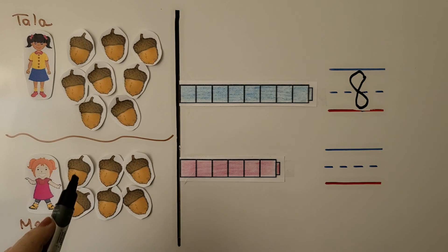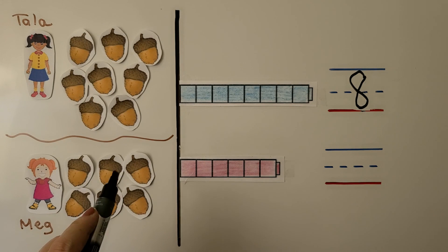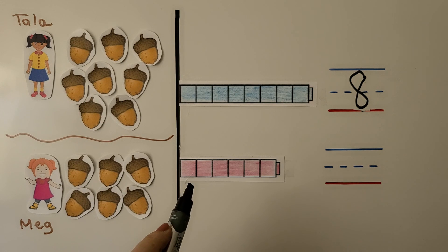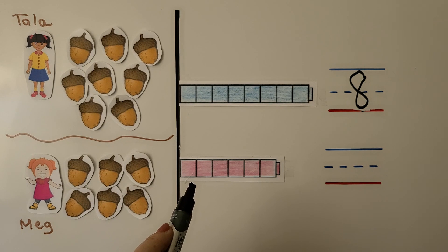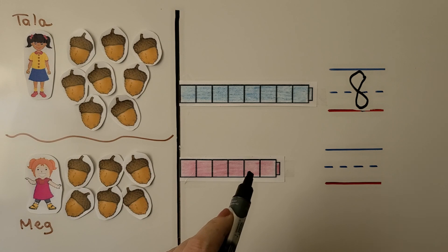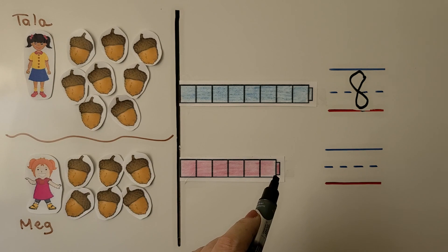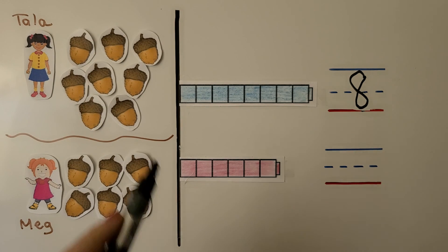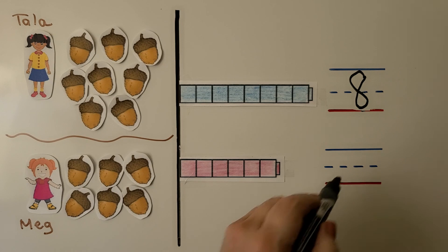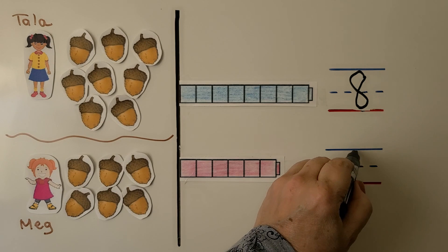Meg has one, two, three, four, five, six. We can color the cubes for a cube train — one, two, three, four, five, six. We color a cube for each acorn they found. We can write the number six.